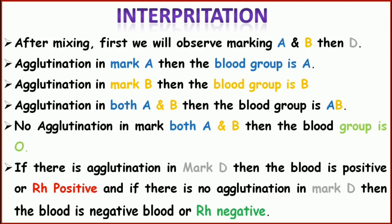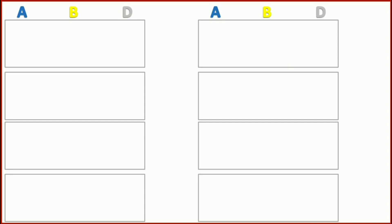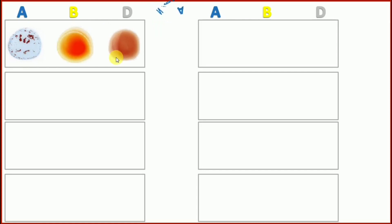Now let's visualize the interpretation with slides marked as A, B, and D. If there is agglutination in A but no agglutination in B and no agglutination in D, the blood group will be A negative. Agglutination in A means antigen A is present; no agglutination in B means antigen B is absent; no agglutination in D means RH antigen is absent. So the blood group is A negative.